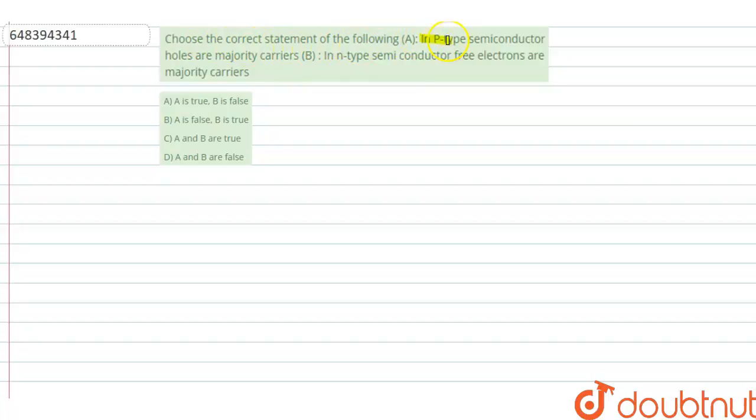Statement A is: in P-type semiconductor, holes are majority carriers. Statement B is: in N-type semiconductor, free electrons are majority carriers.